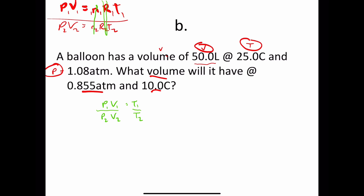You can do this two ways: you can just plug everything in and do the math, or you can rearrange the equation so that what you're looking for is on one side and all other variables are on the other. In this chapter, you really have a lot of flexibility. There are three things you need to show: one, show some kind of equation with variables; two, substitute with numbers; and three, give the answer.